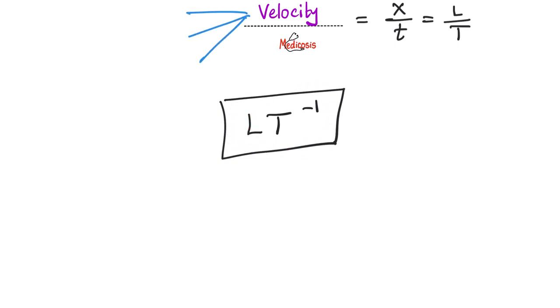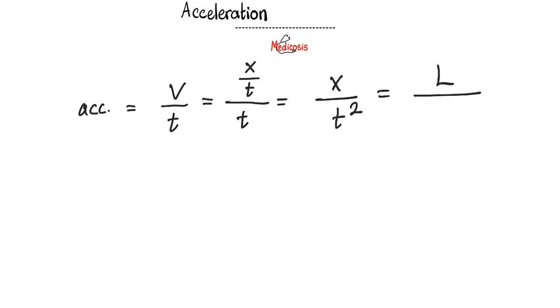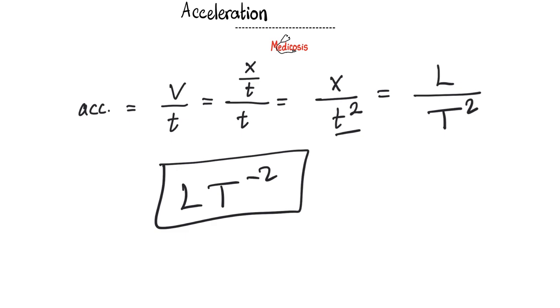All types of velocity — such as average velocity, instantaneous velocity, or any kind of velocity — share the same dimensional formula. How about acceleration? Acceleration equals velocity over time, and velocity is displacement over time. So acceleration is displacement divided by time squared. The dimensional formula for displacement is L, and for T squared is T squared, giving a final answer of L T to the power negative 2. Acceleration due to gravity, abbreviated g, is just another acceleration — so it also has the dimensional formula L T to the power negative 2.